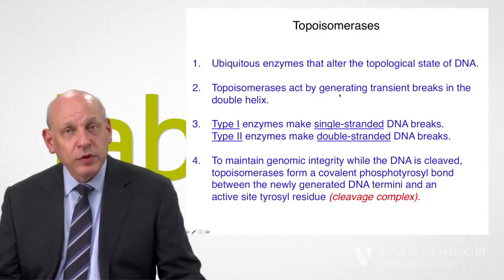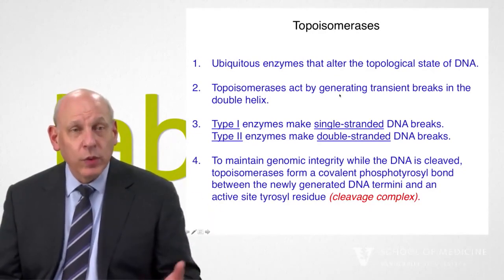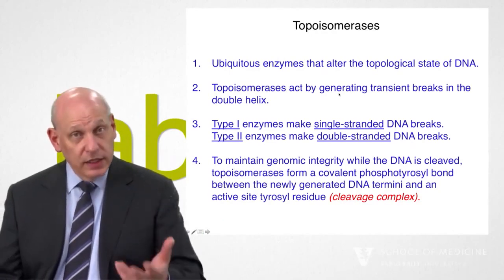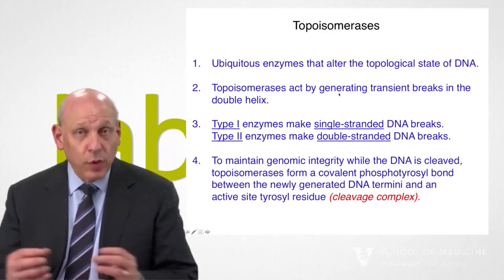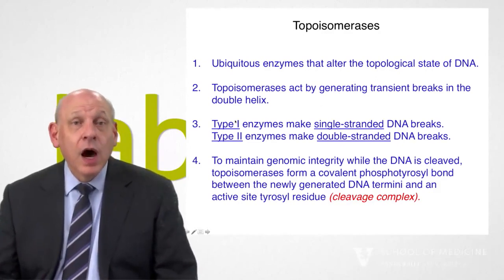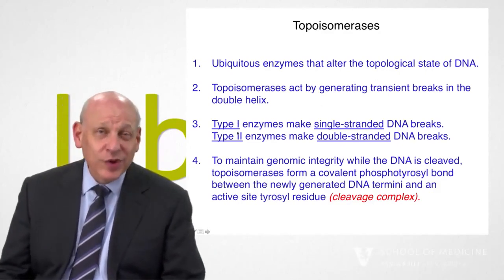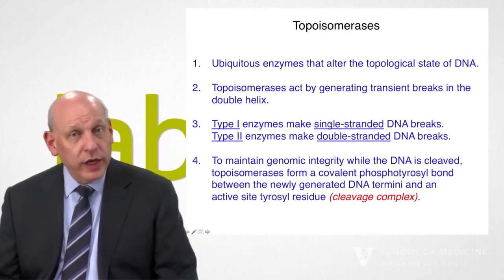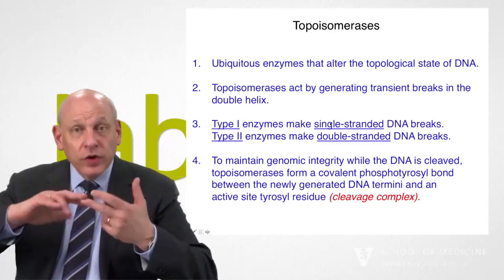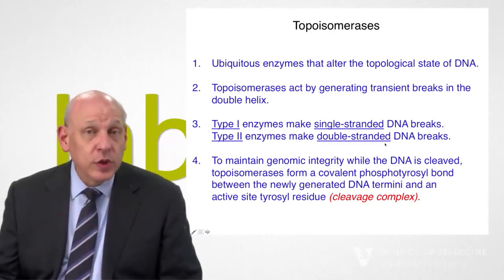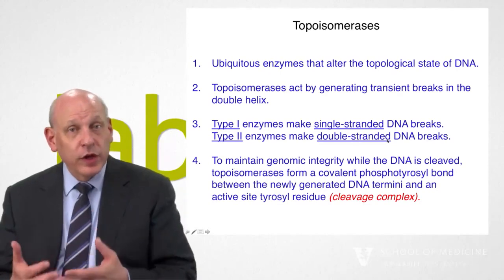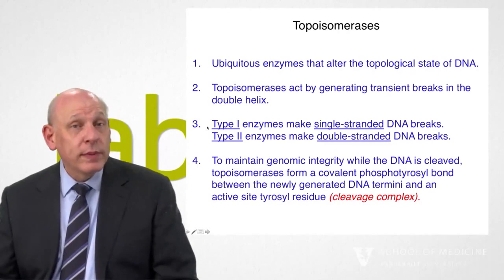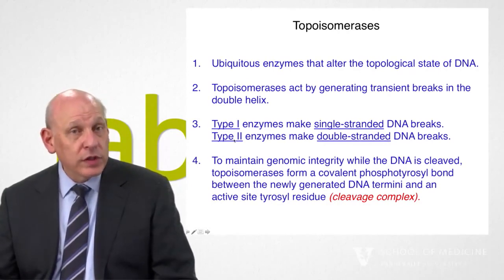Topoisomerases all act by generating transient breaks in the DNA — the only way to get tangles out, just like a tangled rope, is to break it, pull it apart, and put it back together again. There are two classes of topoisomerases: Type 1 makes single-strand breaks and can deal with over- and underwinding. Type 2 makes double-stranded breaks, and these are the enzymes that can also take knots and tangles out. We're going to focus on Type 2 today.